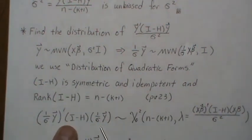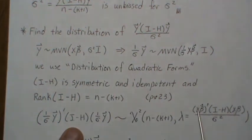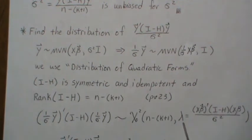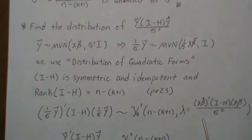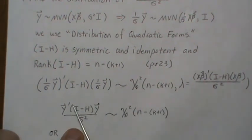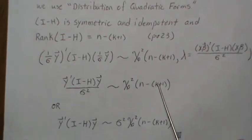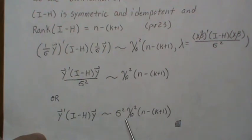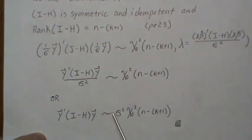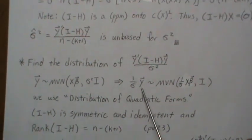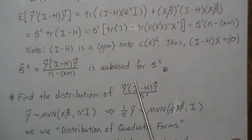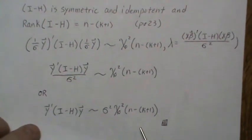This means the quadratic form divided by σ² is chi-squared with N − (K+1) degrees of freedom and a non-centrality parameter involving (I − H)Xβ. But since (I − H)X = 0, the non-centrality parameter is zero, so it's a central chi-squared distribution with N − K − 1 degrees of freedom. Equivalently, the quadratic form itself is distributed as σ² times chi-squared with N − K − 1 degrees of freedom.